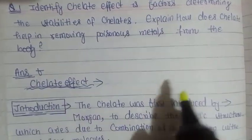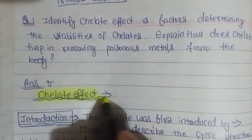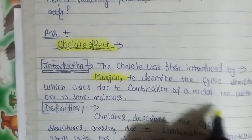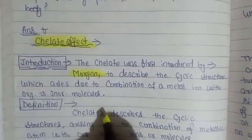Chelate was first introduced by Morgan to describe the cyclic structure which arises due to combination of metal ion with organic and inorganic molecules.